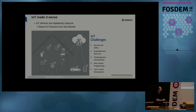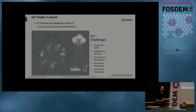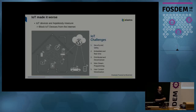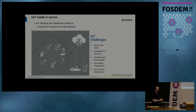IoT made things even worse. Most IoT devices are hopelessly insecure, can be easily hacked, and can be abused for whatever purpose. And really, if we want to have secure IoT devices, we need to block them from being able to access the internet — that's really the only way to make them secure.